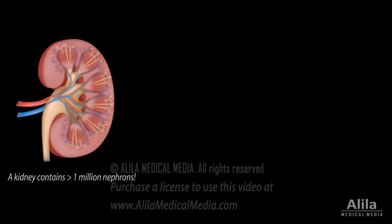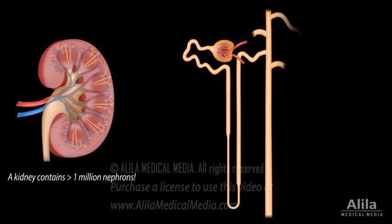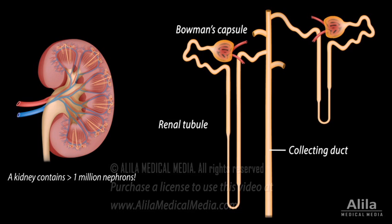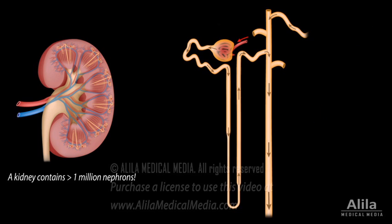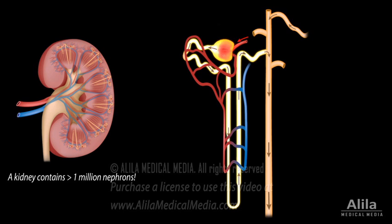Urine formation occurs in functional units of the kidneys called the nephrons. A nephron consists of two major parts: a glomerular capsule, or Bowman's capsule, and a long renal tubule. Renal tubules of several nephrons connect to a common collecting duct. Blood plasma is first filtered in the Bowman's capsule. The filtrate then moves through the long winding renal tubule, alongside a network of blood capillaries, before draining into the collecting duct.